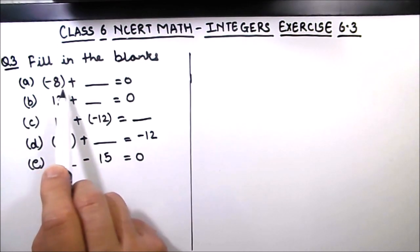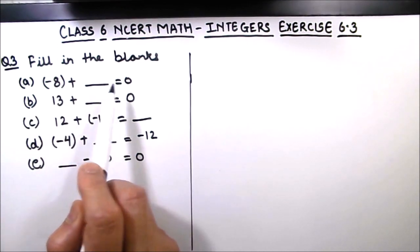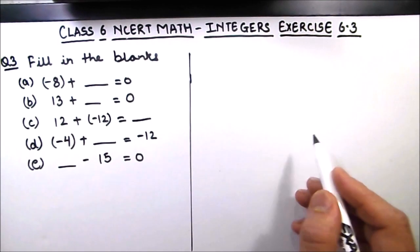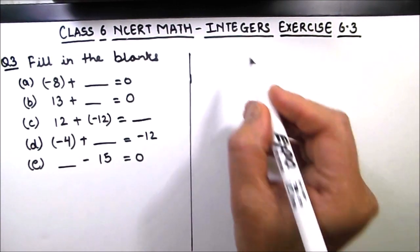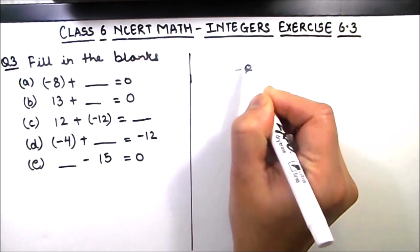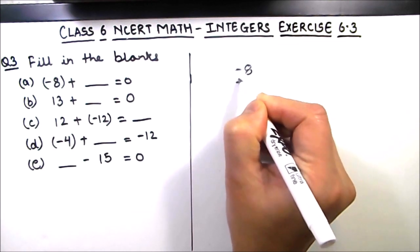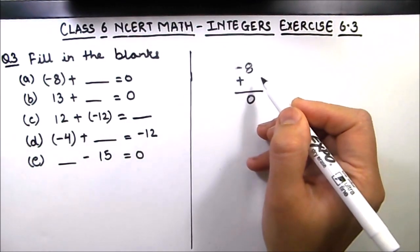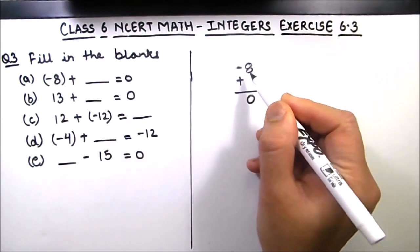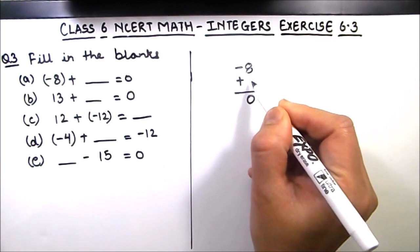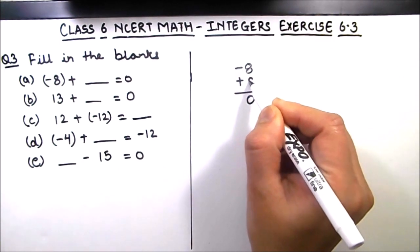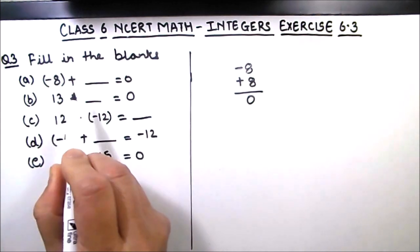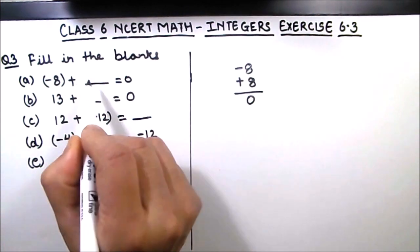The first part is: minus 8 plus what is equal to 0. That means what number should you add to minus 8 to get the result as 0. This is very easy — when you add the same number with a different sign, you get 0. So the first blank will be 8.